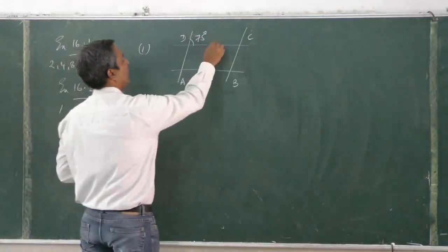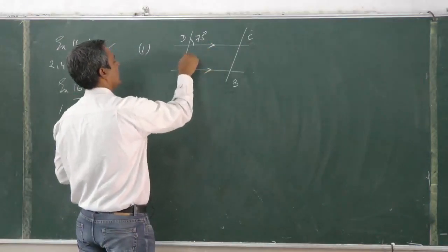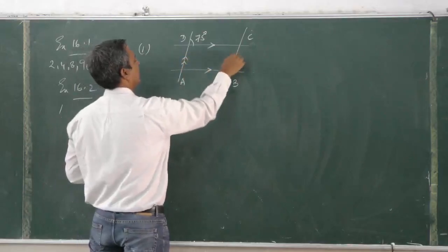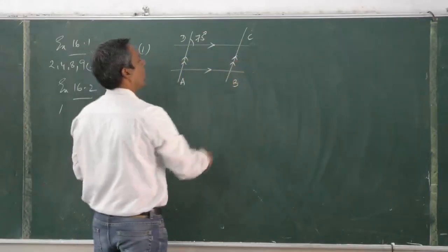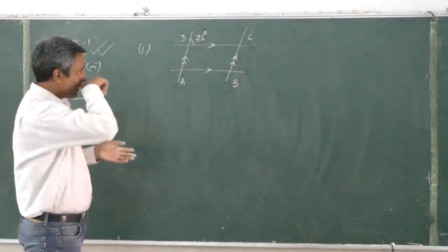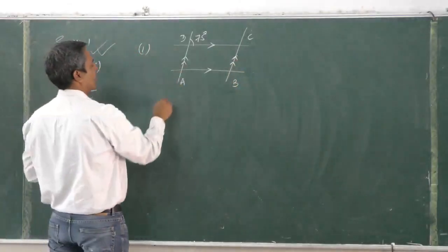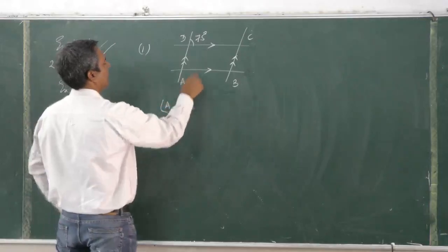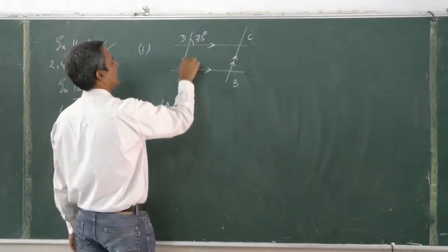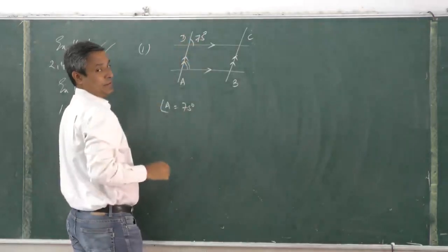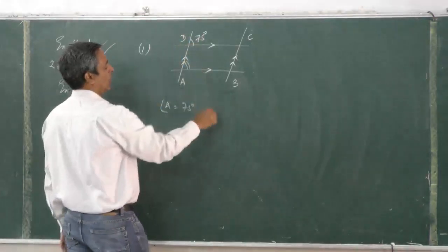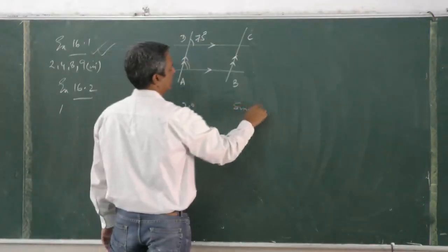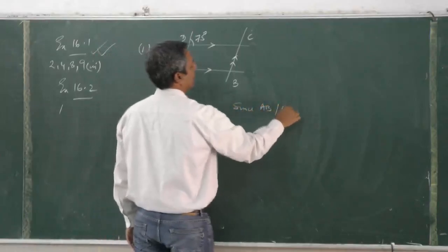Let's do this now. Angle A is equal to 75 degrees. This angle is equal to 75 degrees. For what reason? Because since AB is parallel to DC, AB is parallel to DC, so this becomes corresponding angles if you remember parallel lines.